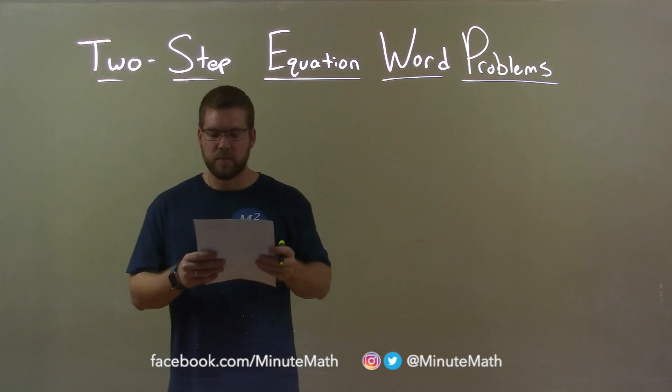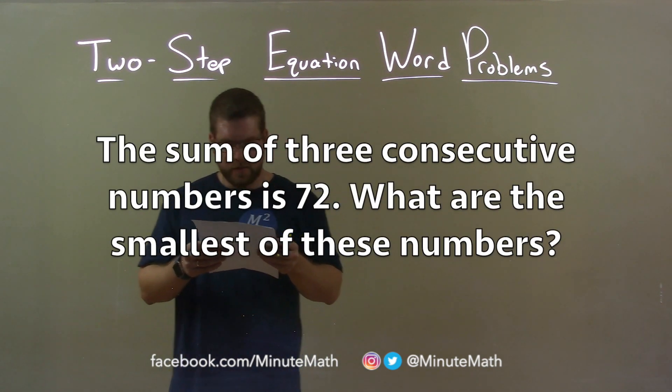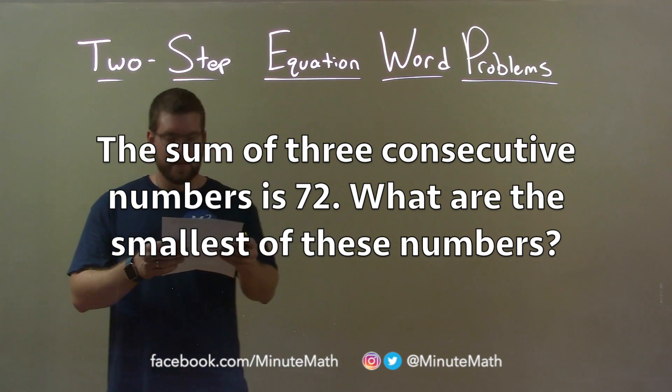If I was given this word problem: the sum of three consecutive numbers is 72. What are the smallest of these numbers?